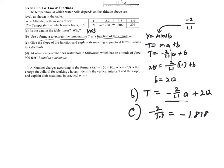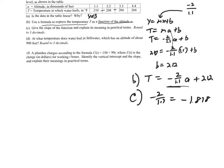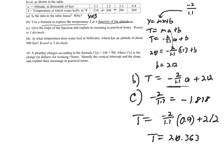For part d, we use our formula to find at what temperature water boils at Still Water, which has an altitude of about 900 feet. Since altitude is in thousands of feet, we plug in 0.9: T = (negative 2 / 1.1)(0.9) + 212. We get T ≈ 210.363 degrees.